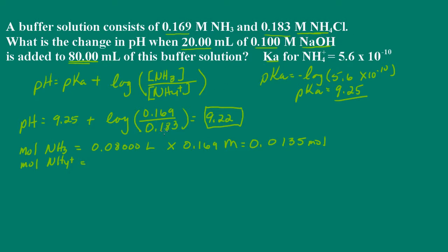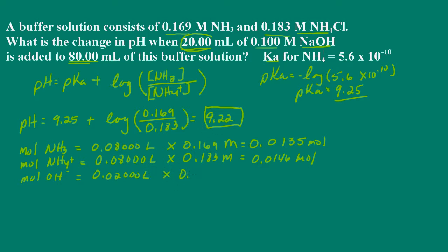We end up with 0.0135 moles of ammonia. Now for the ammonium ion — that comes from the ammonium chloride — we have 80 milliliters of the buffer solution, multiplied by 0.183 molar, giving us 0.0146 moles of ammonium. Then for the moles of hydroxide ion: 20 milliliters, which is 0.02 liters, multiplied by the concentration of 0.1 molar, gives us 0.002 moles of hydroxide ion.